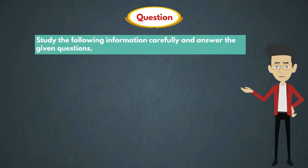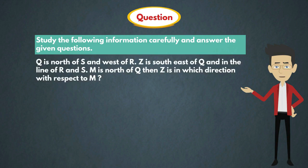Study the following information carefully and answer the given questions. Q is north of S and west of R. Z is southeast of Q and in the line of R and S. M is north of Q. Then Z is in which direction with respect to M?